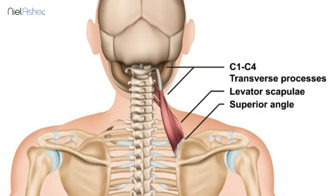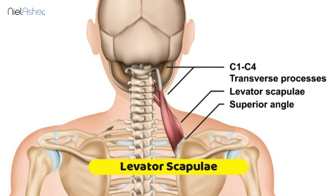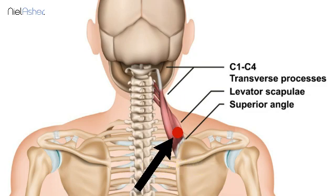Trigger points occur in two places in the levator scapulae muscle. The first is just where the muscle attaches into the superior border of the scapula. This is really common. A lot of people who have a sore shoulder will reach behind them — you can kind of reach this with the tip of your fingers. The muscle itself is a flat muscle that sits underneath the trapezius, so you have to do a little bit of digging to find this trigger point.